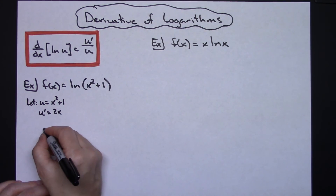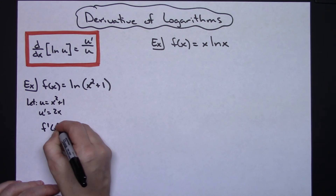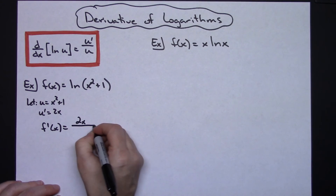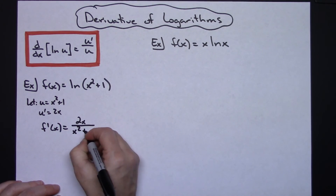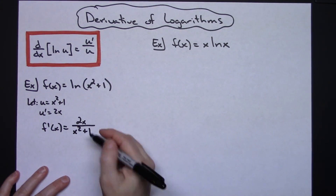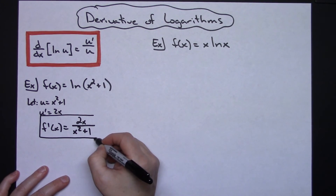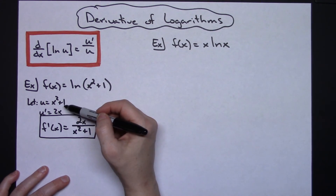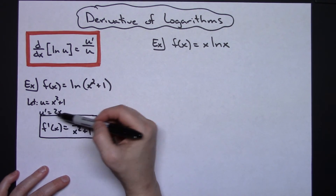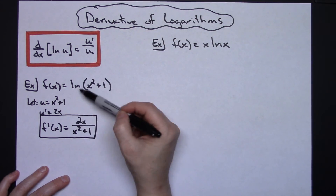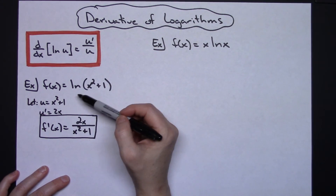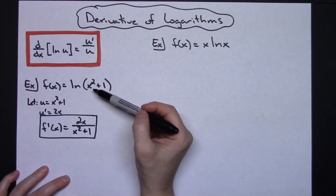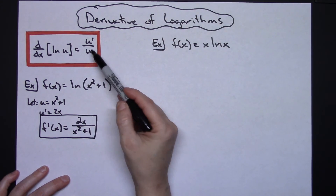Implementing that formula, f prime of x is going to be u prime over u — u prime is 2x, and my u that I chose was x squared plus 1. That's a relatively straightforward derivative calculation. I did show the writing down of u and u prime here, but when it's a function this simple, there's no need to really write this down unless you need to see the formula.